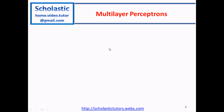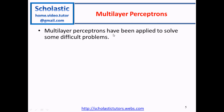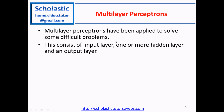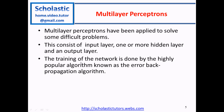So we come to the theory of multilayer perceptrons. Multilayer perceptrons have been applied to solve some difficult problems. They consist of an input layer, one or more hidden layers, and an output layer. The training of the network is done by the highly popular algorithm known as the error backpropagation algorithm.